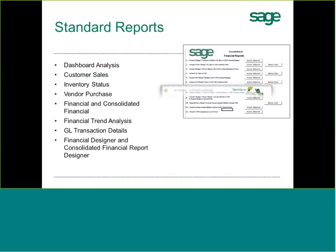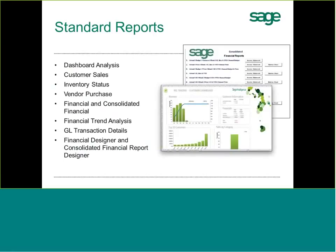This is a view of all of our standard reports. We have dashboard analysis reports, customer sales reports — these are all standard reports shipped with SAGE Intelligence — as well as inventory and vendor purchase reports that are operationally based. And then of course your financial and consolidated financial reports, including trend analysis and GL transaction details. All of these reports can be run immediately with your data and will display real-time results.